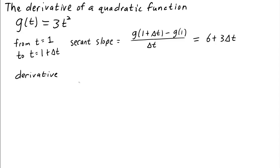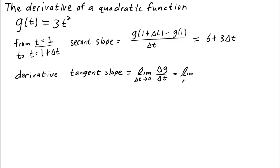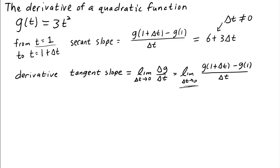To calculate the derivative, or the instantaneous rate of change, we need the tangent slope. The tangent slope is just the secant slope delta g over delta t, in the limit that delta t goes to 0. Since we're looking at t equals 1, this will be the limit as delta t goes to 0 of g of (1 plus delta t) minus g of 1, over delta t. The secant slope is valid as long as delta t is not equal to 0, and taking the limit means we never let delta t get exactly to 0. So we can replace the secant slope with 6 plus 3 times delta t, and take the limit as delta t goes to 0 of 6 plus 3 times delta t.